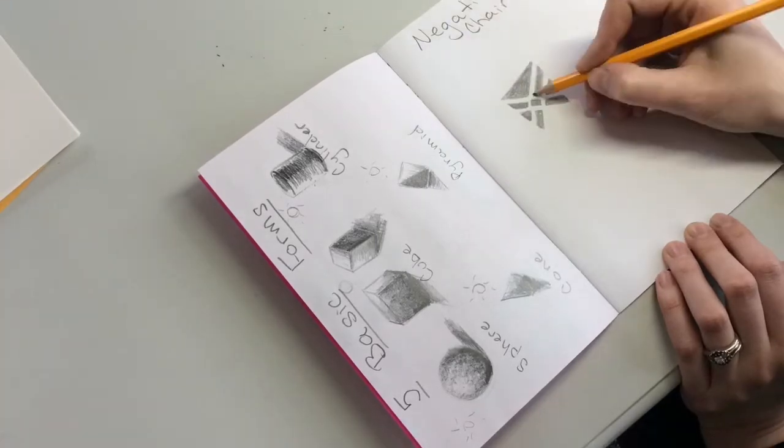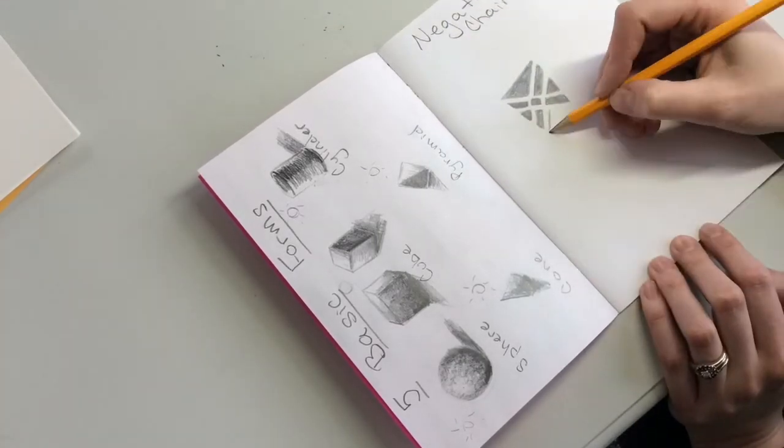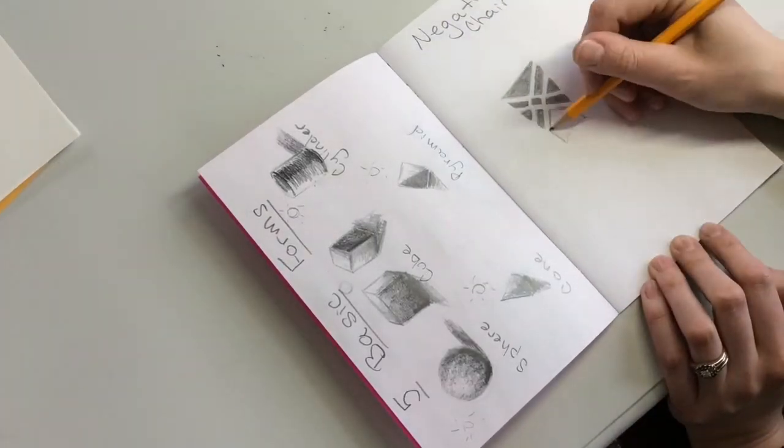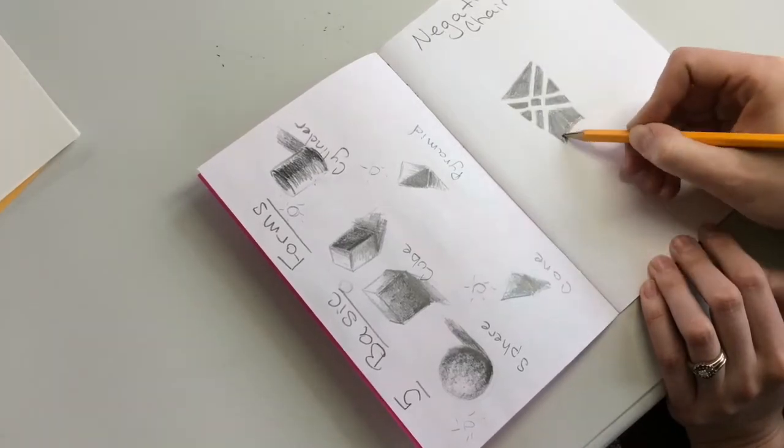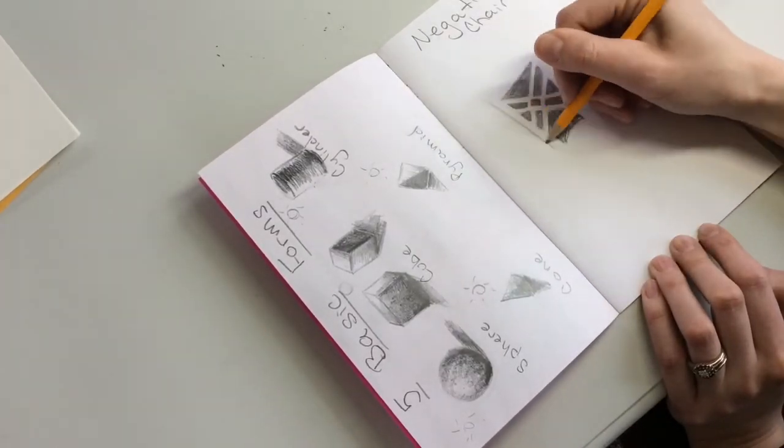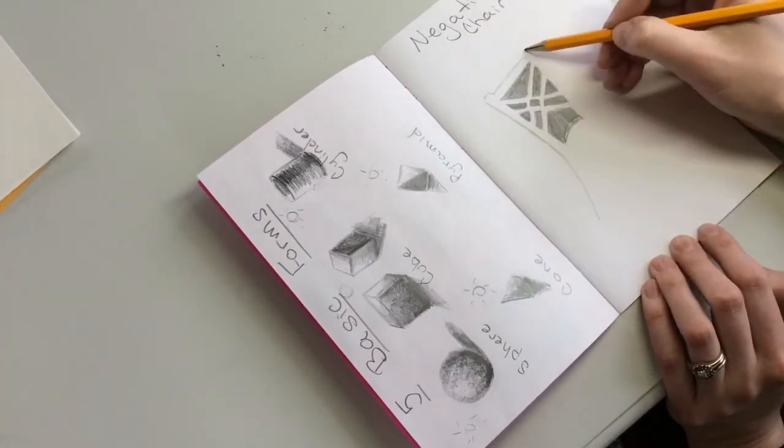You do not need to add any details. This is meant to feel like shapes, feel like negative space. So, if you want to just shade in some of those shapes, it'll help it stand out a little bit more.